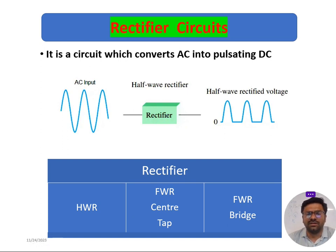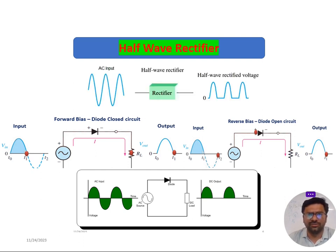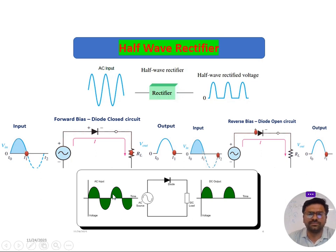Now we will move on to the half wave rectifier. We will be understanding the circuit diagram of a half wave rectifier, how it operates in forward bias condition of a diode, how it works in reverse bias condition, and what the overall output waveform looks like for a given input waveform.